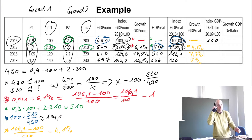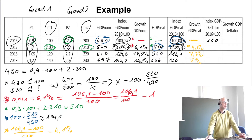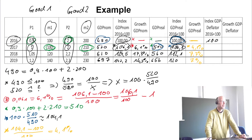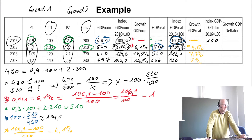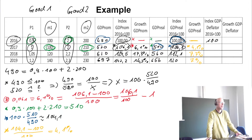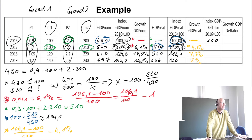Now let's go to the definition of the GDP deflator. The GDP deflator is just 100 times the ratio of nominal GDP over real GDP.